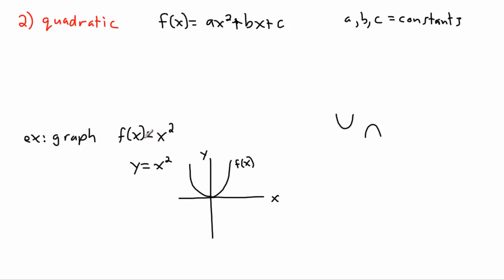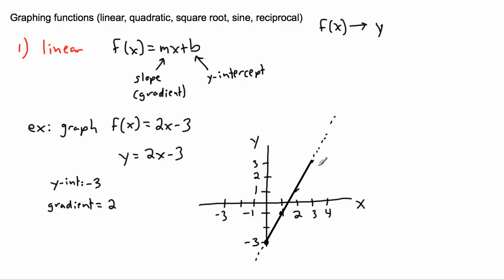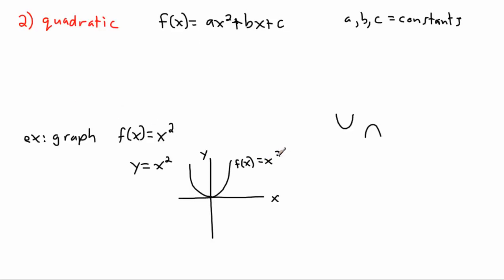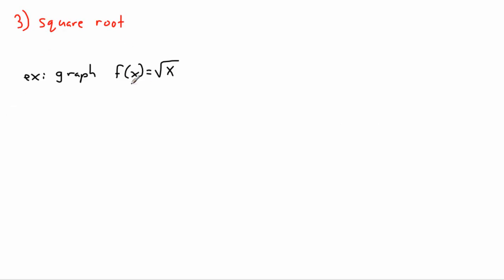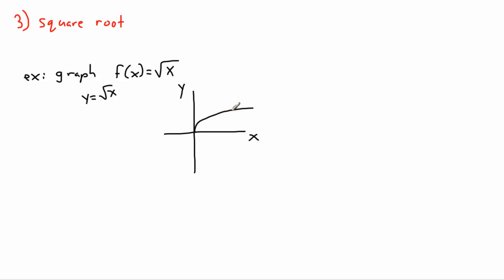So I've drawn f(x) = 2x − 3 over here, and f(x) = x² over there. We can also do the square root function, y = √x. If you know how this works, it starts at (0, 0), goes up and to the right, and keeps going up — but it curves downward as it goes, so it doesn't shoot straight up. It flattens out gradually. These are important graphs to know without a calculator.